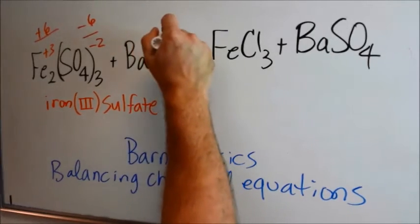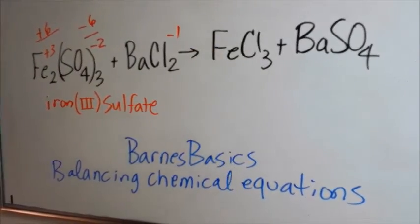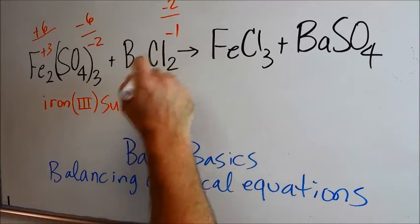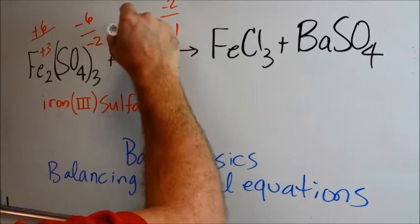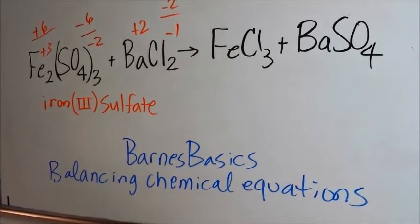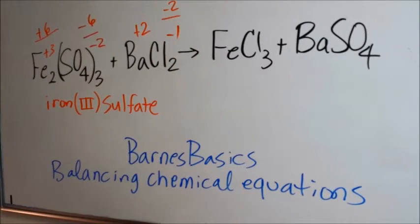Chlorine is negative 1 because it's a halogen. It's in group 7a. 2 times negative 1 makes negative 2 and so that would by default mean that barium since there's only one of them would have to be plus 2 which is confirmed it's in group 2a.